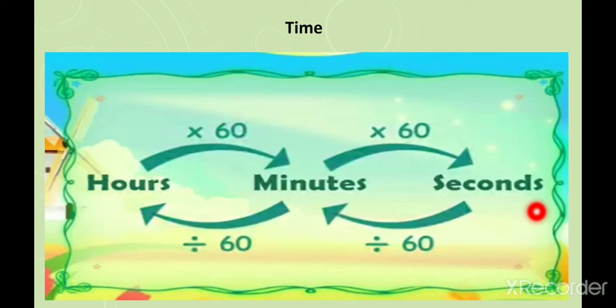Moving backwards, if you want to convert seconds into minutes, you have to divide by 60. If you want to convert minutes into hours, divide by 60. Remember, if you are converting a bigger unit to a lower unit, you multiply. If you are converting a smaller unit to a bigger unit, you divide.